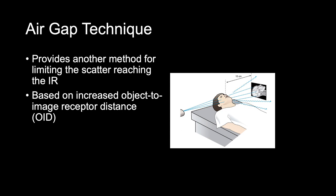The air gap technique is an alternative to using a grid to control scatter reaching the IR. By moving the IR away from the patient, more of the scatter radiation misses the IR. Using an increased OID is necessary for the air gap technique; however, this does decrease image quality. To decrease unsharpness and increase spatial resolution, the radiographer must increase SID. So if you have a large OID, then you must increase your SID.